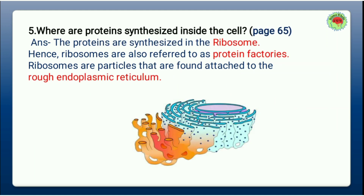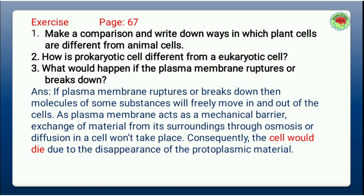Question number five: Where are proteins synthesized inside the cell? Proteins are synthesized in the ribosome. In this image, the purple structure is the nucleus, the sky blue is the rough endoplasmic reticulum with dots representing ribosomes — which are the sites of protein synthesis — and the red color is the smooth endoplasmic reticulum.